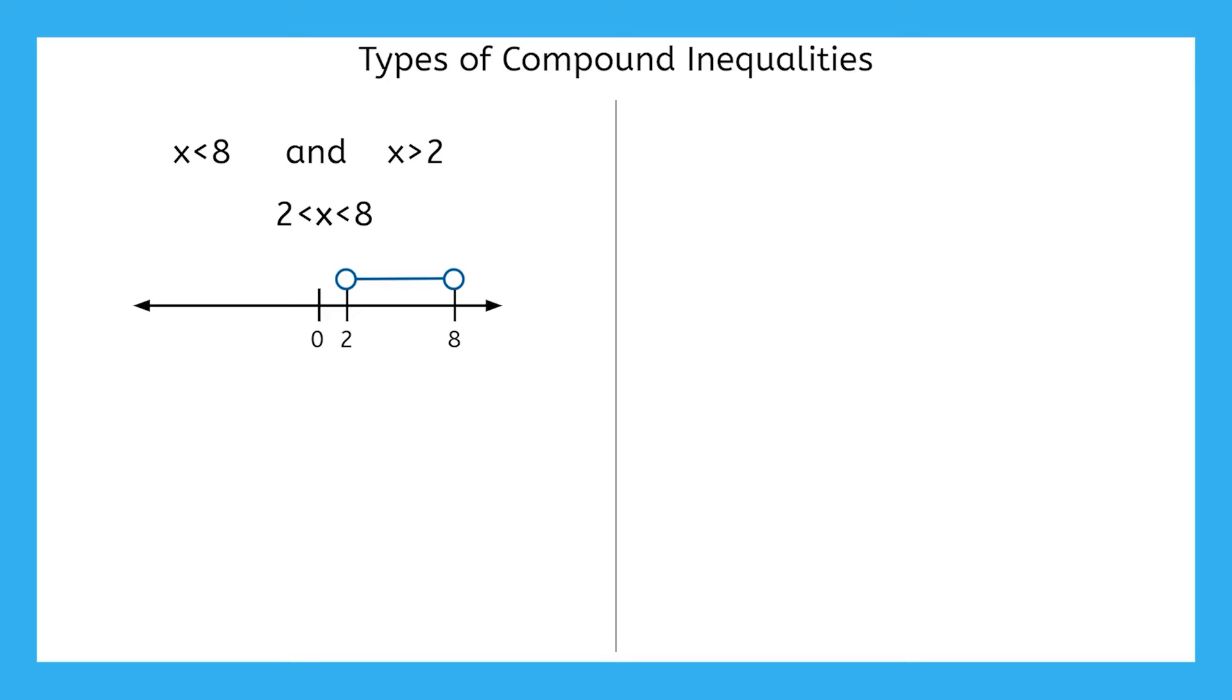And don't forget about another way we've learned to write this, interval notation. Notice that this interval notation doesn't have an infinity symbol, which is something we haven't really seen before. You'll see this happen when we actually have two endpoints and aren't using an arrow in our number line representation. This interval notation says that our solutions are all the numbers from two to eight, but not including two or eight.